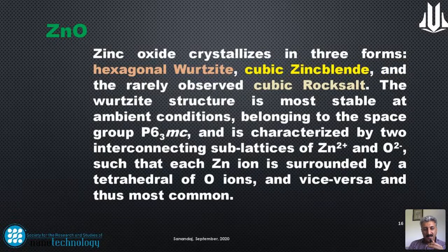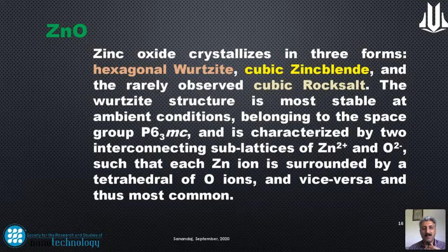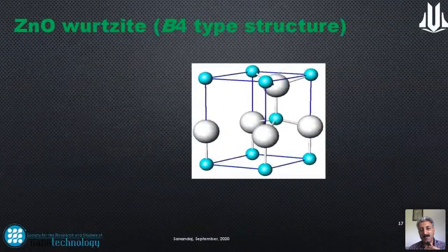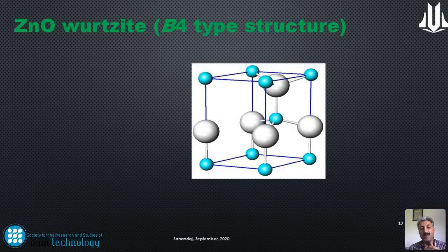For zinc oxide, crystals exist in three forms: hexagonal wurtzite, which is the most common and most stable at ambient conditions, belonging to space group P63mc; cubic zinc blende; and the rarely observed cubic rocksalt. The wurtzite structure is characterized by two interconnecting sublattices of Zn2+ and O2-, where each zinc ion is surrounded by a tetrahedron of oxygen ions and vice versa.